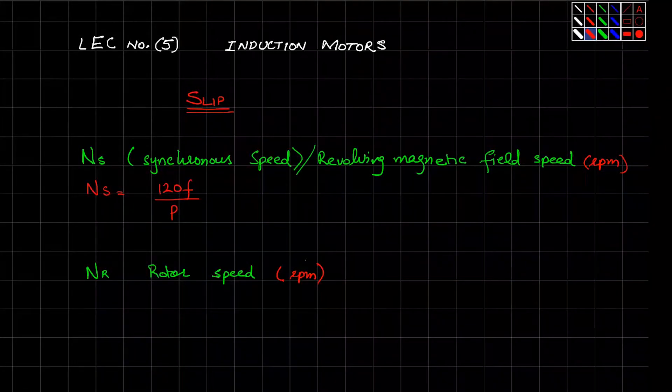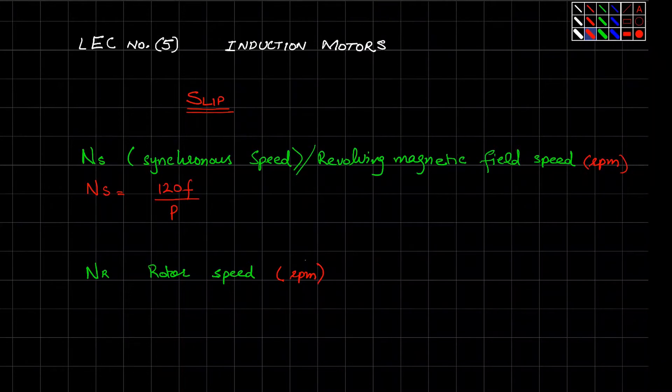Bismillahirrahmanirrahim, this is lecture number five on induction motors. Today we are going to talk about slip. So we have Ns, you already know that this is the synchronous speed, and this is the speed of revolving magnetic field, and it is represented by 120f by p, where f is the frequency.